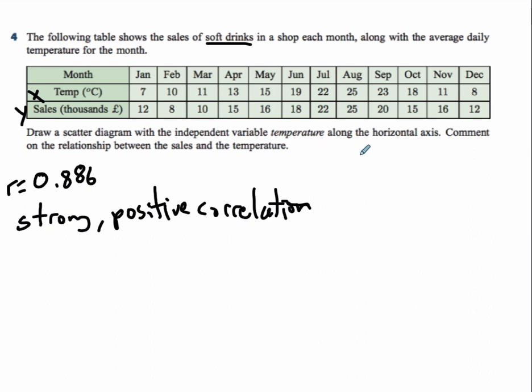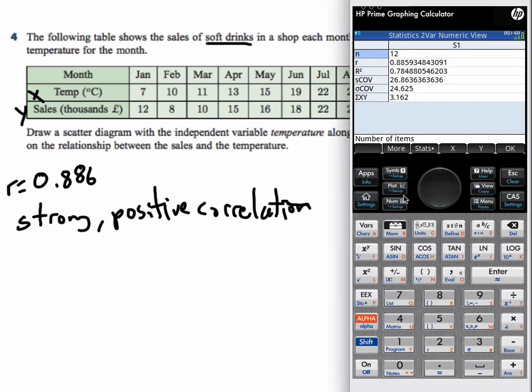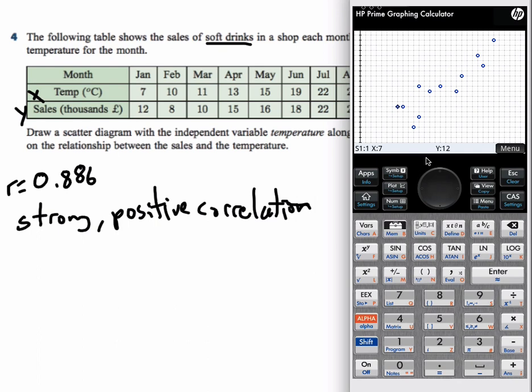Okay, let me show you what else you can do on the calculator. You can also check out the scatter plot by pressing plot, or actually you have to escape, then press plot, and then you can see the scatter graph, and it does look like a strong, positive correlation.